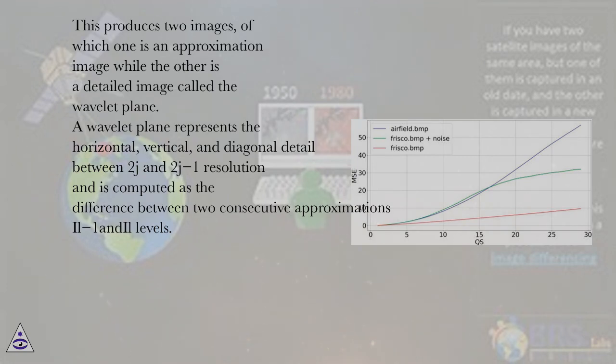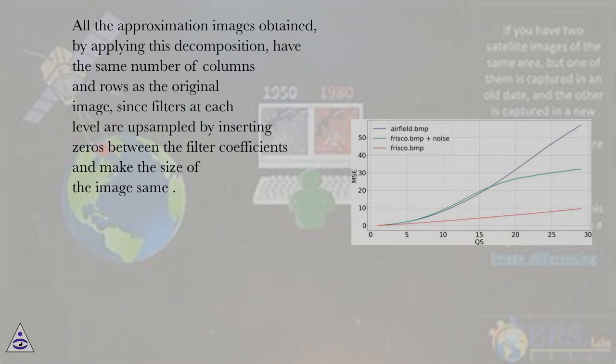And is computed as the difference between two consecutive approximations Il-1 and Il levels. All the approximation images obtained by applying this decomposition have the same number of columns and rows as the original image.